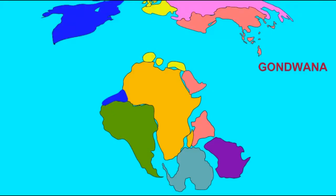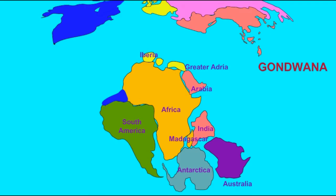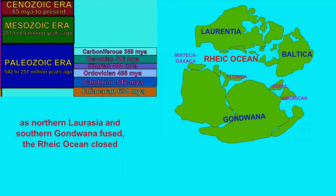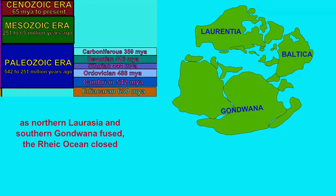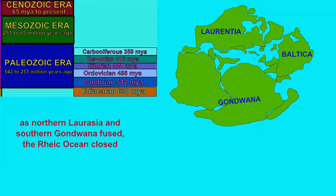The southeastern coast of the United States and the eastern portion of Mexico were not originally part of North America's nucleus, Laurentia, but rather were derived from terrains or microcontinents associated with the giant southern supercontinent Gondwana. These became part of North America during the formation of Pangaea — either fusing as Gondwana approached, or remaining sutured to North America when Pangaea rifted.